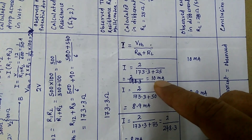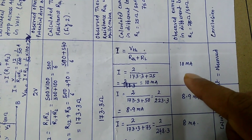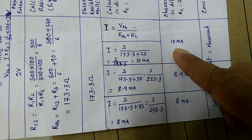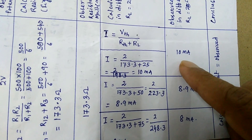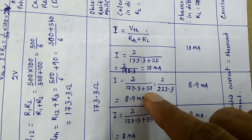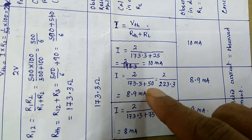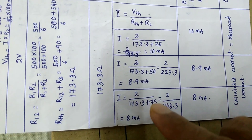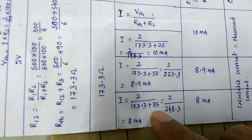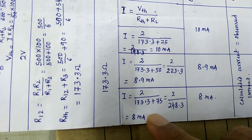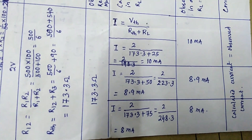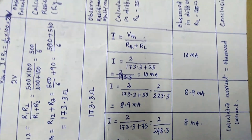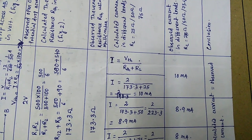Using I = V divided by R, you calculate the current, and if that matches with the experimental current, you can verify Thevenin's theorem. I have taken three different load resistances: 25 Ohm, 50 Ohm, and 75 Ohm, and calculated the current — about 10 milliampere, 8.9 milliampere, and 8 milliampere respectively.